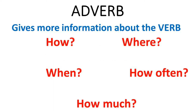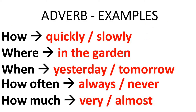First of all, let's understand an adverb. An adverb is one word that gives more information about the verb, about the action. It tells us how we do it, where we do it, when we do it, how often and how much. Adverb examples are things like quickly and slowly for how we do it, in the garden for where we do it, yesterday or tomorrow for when we do it, always and never for how often, and very or almost for how much. As you can see, an adverb describes many things about a verb.